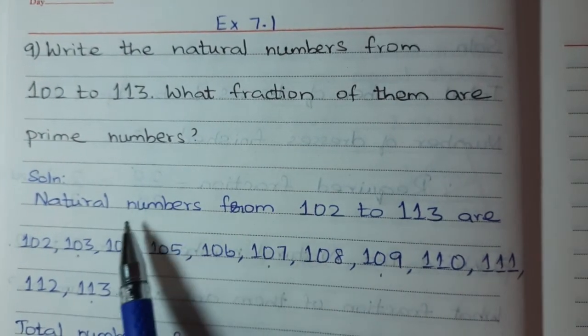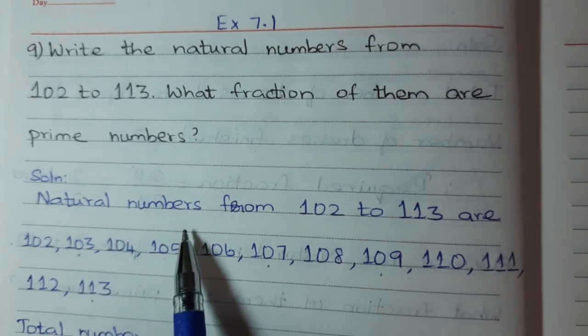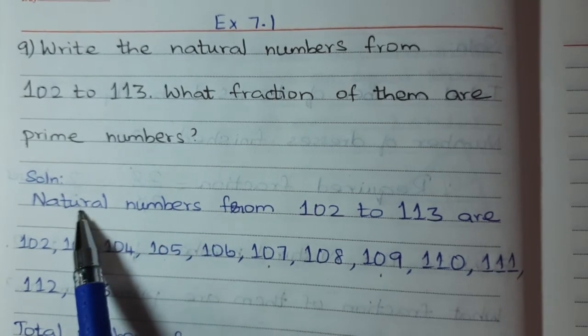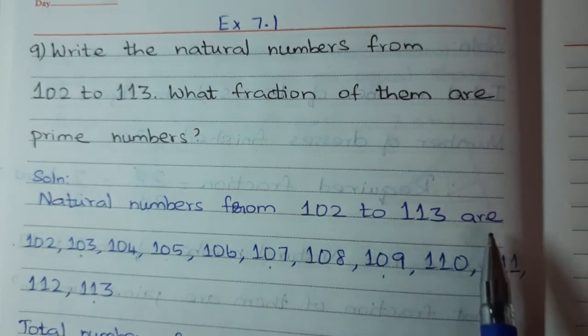The last problem we have studied, what is the natural number? All positive integers are said to be natural numbers. So first we have to write natural numbers from 102 to 113.